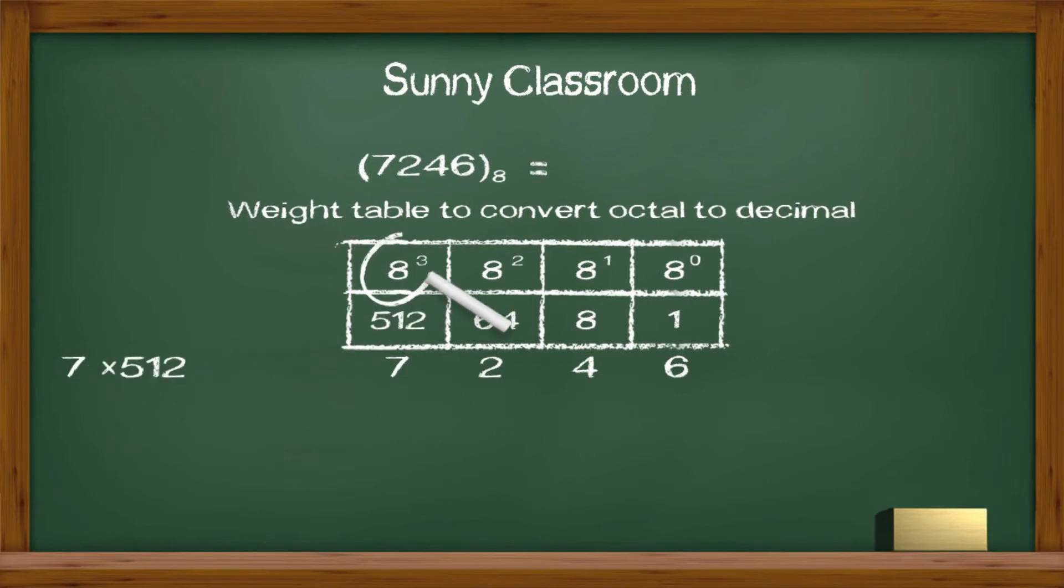7 times 8 to the third power, which is 512, and we get 3584. 2 times 8 to the second power, which is 64, and we get 128.